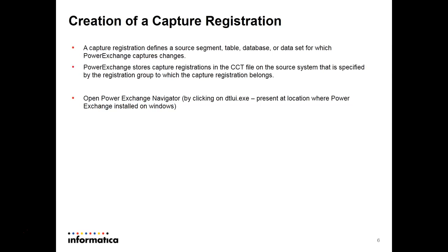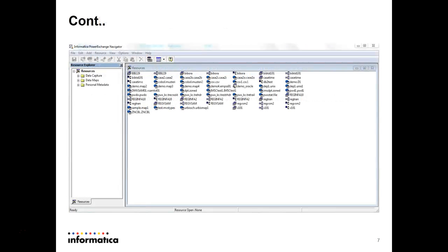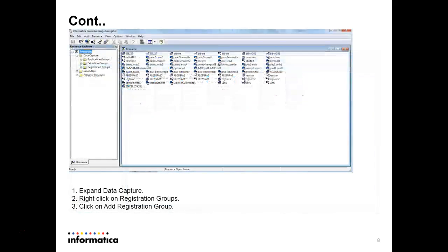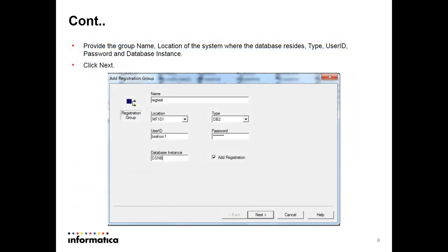To create a capture registration, we have to first open the PowerExchange Navigator. Go to the installation library where the installers are present; in that library you will find a file called dtlui.exe. Click on that exe file and the Navigator will open. In the Navigator, go to Data Capture, expand it, and you will find Registration Groups.